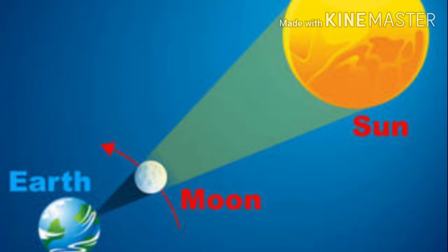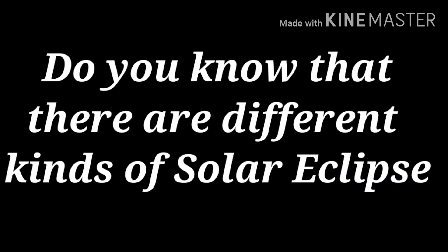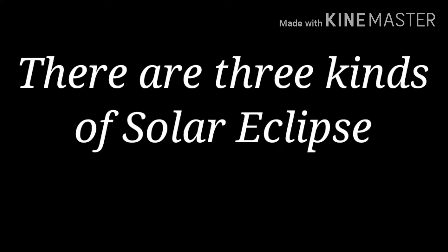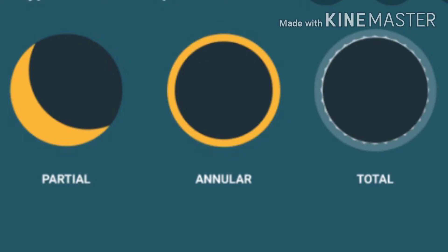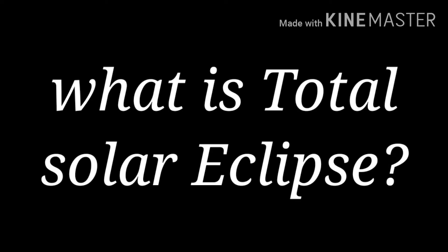Do you know that there are different kinds of solar eclipse? There are three different kinds of solar eclipse. This picture is showing partial, annular, and total eclipse. I'm going to tell you about the total one.